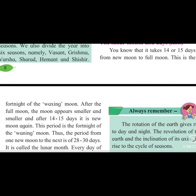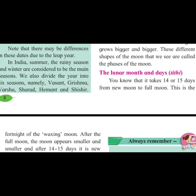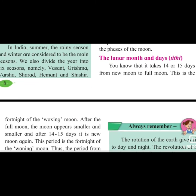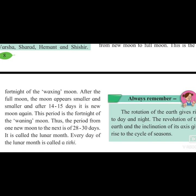There are two new terms: waxing moon and waning moon. It takes 14 to 15 days from new moon (Amavasya) to full moon (Purnima) — that increasing phase is called the waxing moon. From full moon back to new moon again takes another 14 to 15 days. From one full moon to another full moon is 28 to 30 days, which is the lunar month, and every day of the lunar month is called a Tithi.